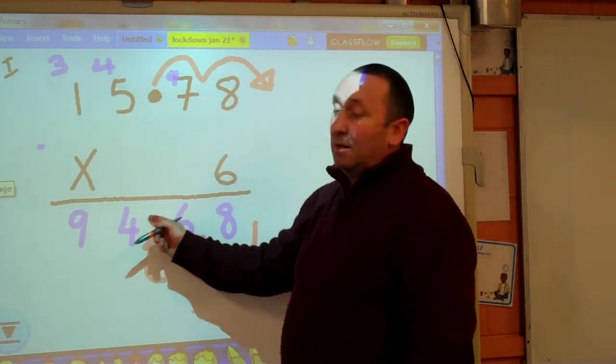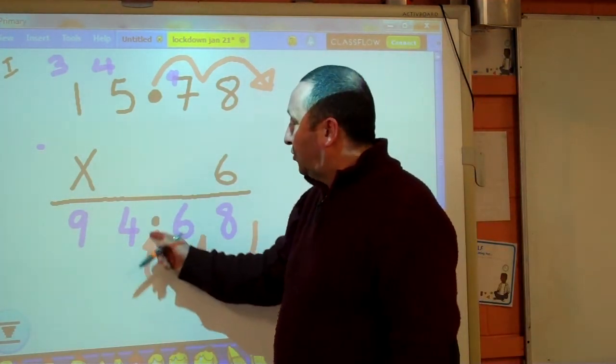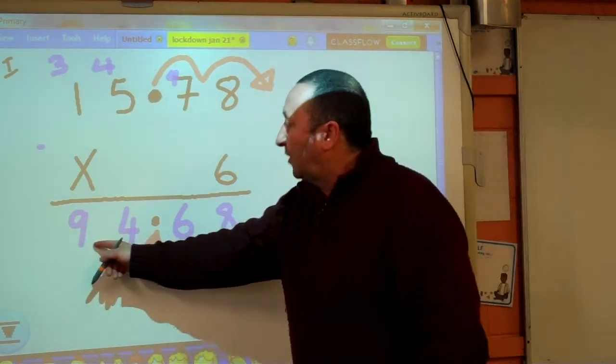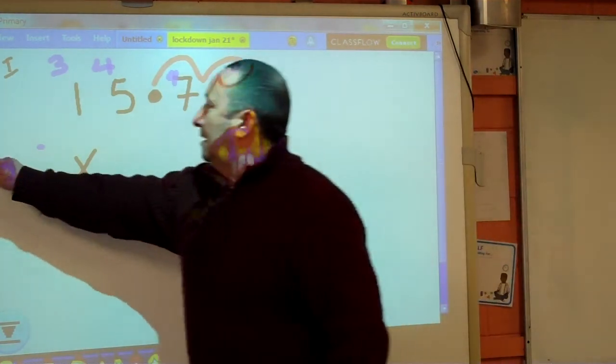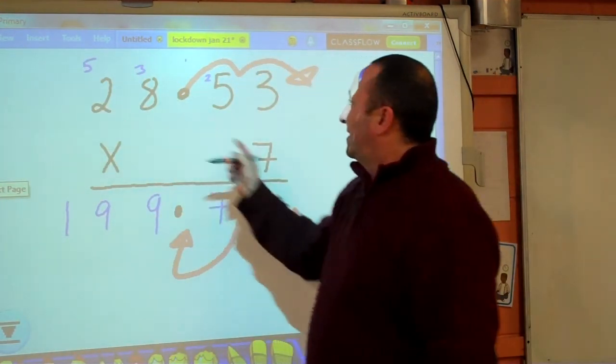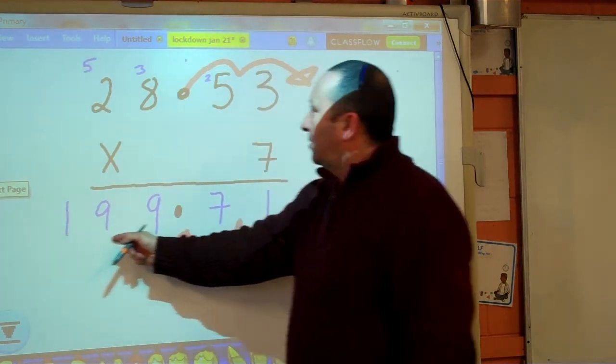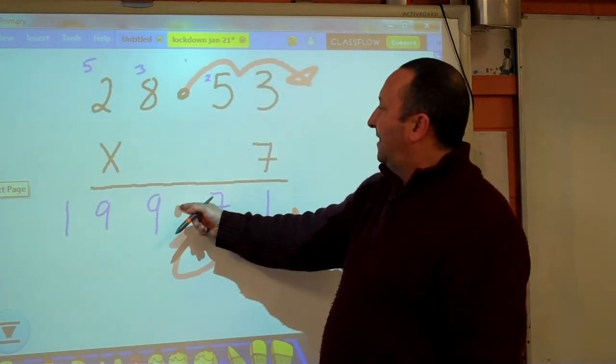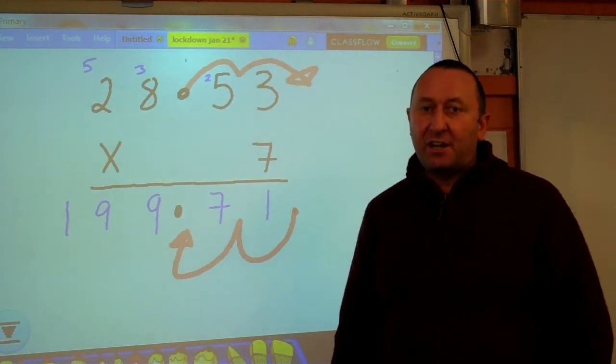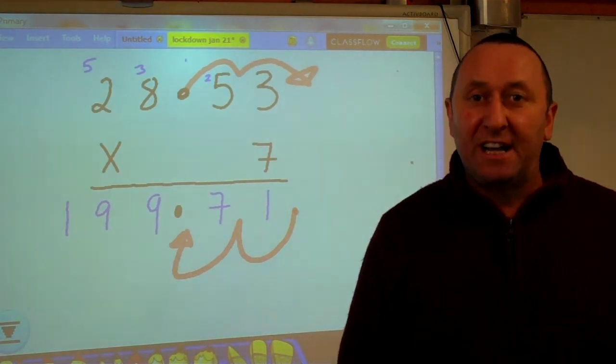So by approximation, my decimal point should be in there. You've got to think, can you estimate what the answer will be? By rounding off, 7 times 30 is 210, so that would be 210 coming in there. So it has to be in there. That's how you do simple multiplication of decimal numbers.